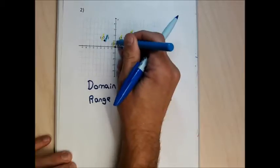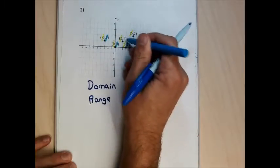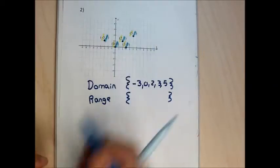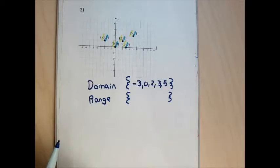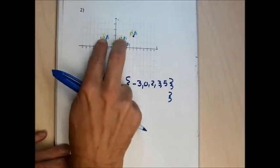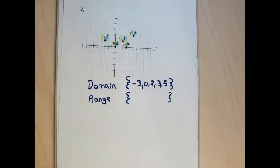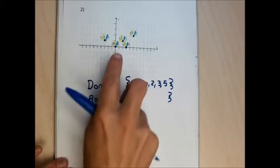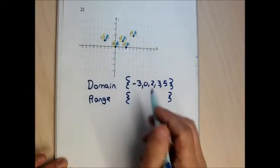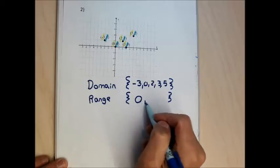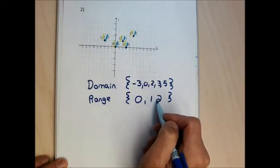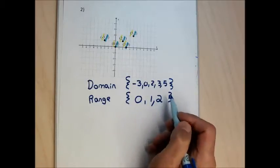For the range, I need the y-coordinate of every point. Looking at the points, the y-values I have are two zeros, two ones, and a two. Although I could write all of them, it's not necessary to duplicate values when writing the range. So I just write one zero, one one, and one two — the range is {0, 1, 2}, separating the numbers with commas inside squiggly set braces.